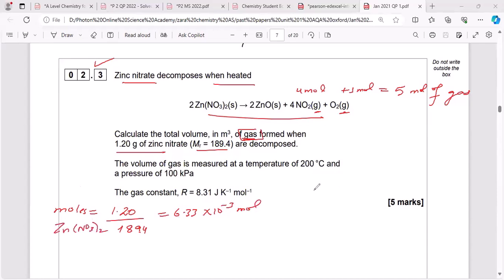Now I need to compare moles of zinc nitrate with moles of gas. Total moles of gas is 5. Now you can see in the balanced chemical equation, the mole of zinc nitrate is 2, while the mole of gas is 5, so this is 2 to 5 ratio. But if I have 1 mole of zinc nitrate, then the moles of gas is 5 upon 2. But we have this number of moles of zinc nitrate, so moles of gas would be 5 upon 2 times 6.33 times 10 to the power minus 3.